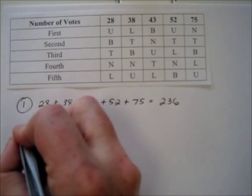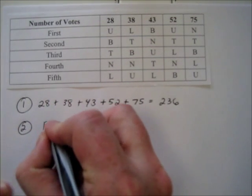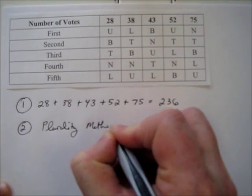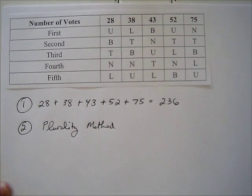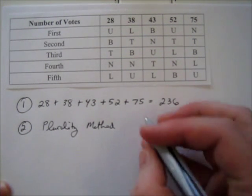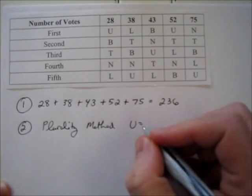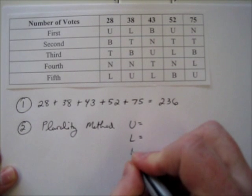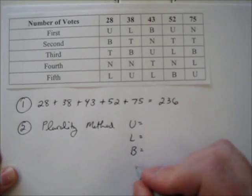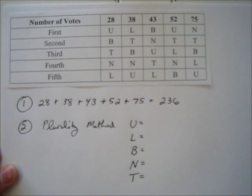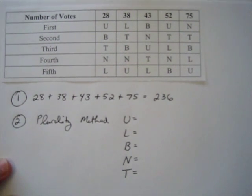Question two asks who wins if we use the plurality method. Under the plurality method, all we care about are first-place votes. So I'm going to make a list of our five candidates: Usher, Lifehouse, Blue Cantrell, Nelly, and Train.